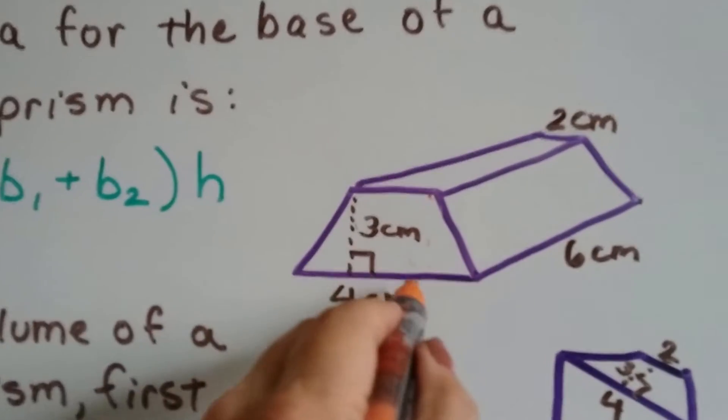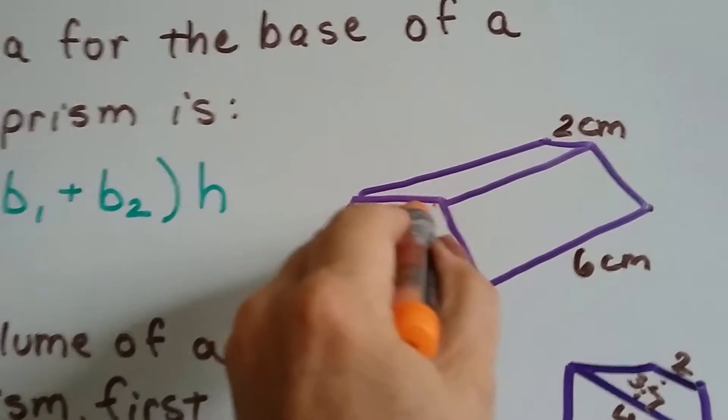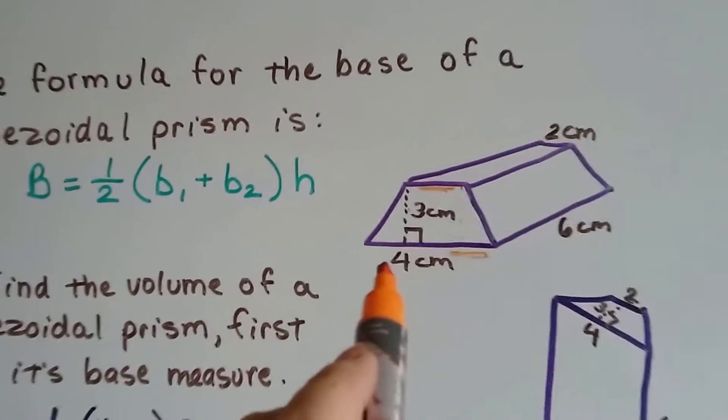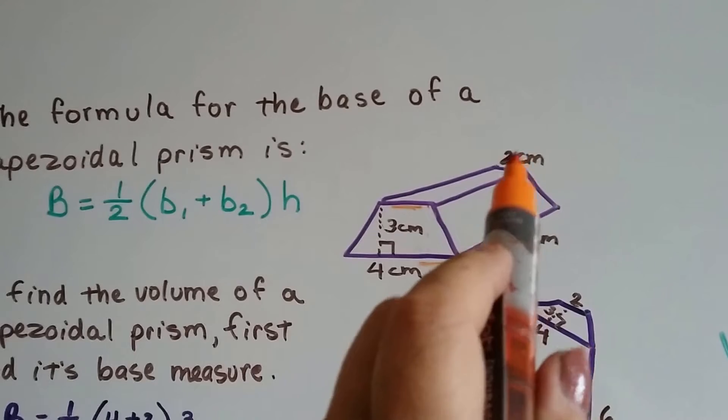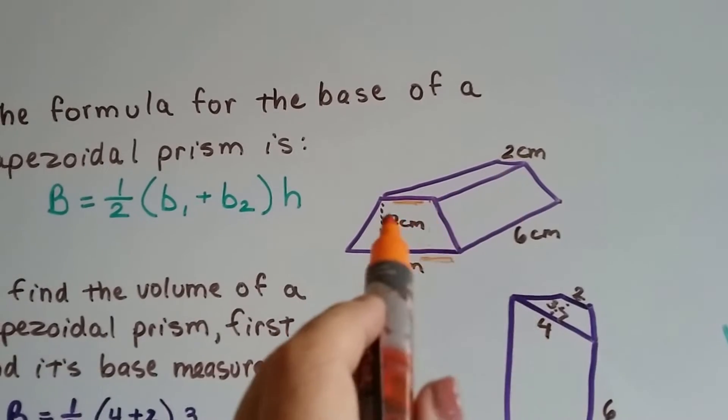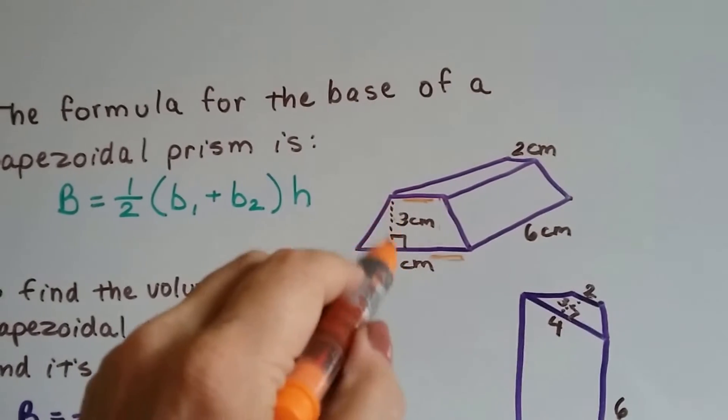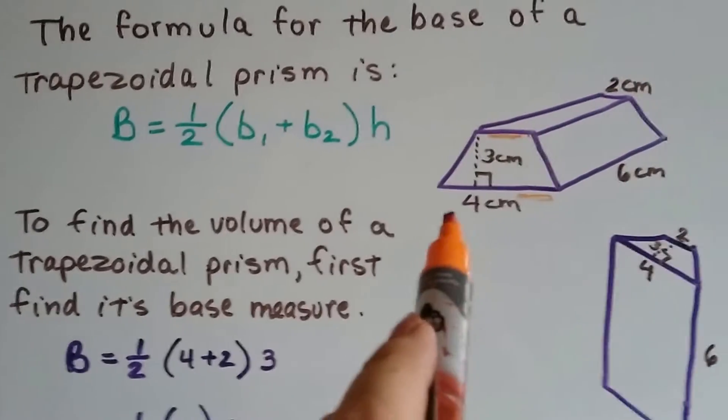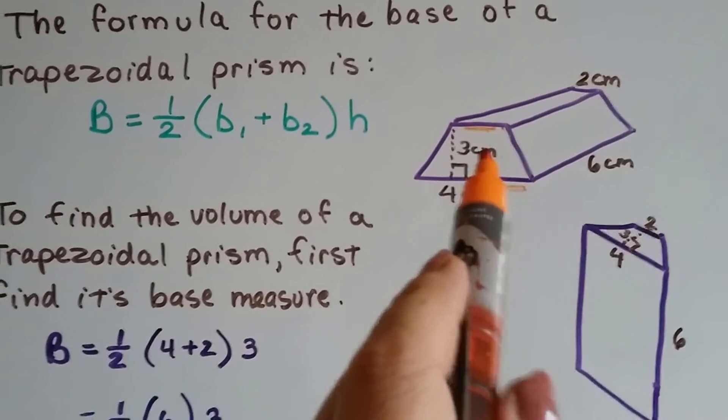So here's base 1 and here's base 2 of the trapezoid. So we have to add the 4 centimeters and the 2 centimeters. See if that's 2 centimeters and that's 2 centimeters? The height of the trapezoid is 3. So we've got to do 4 plus 2 times that 3.